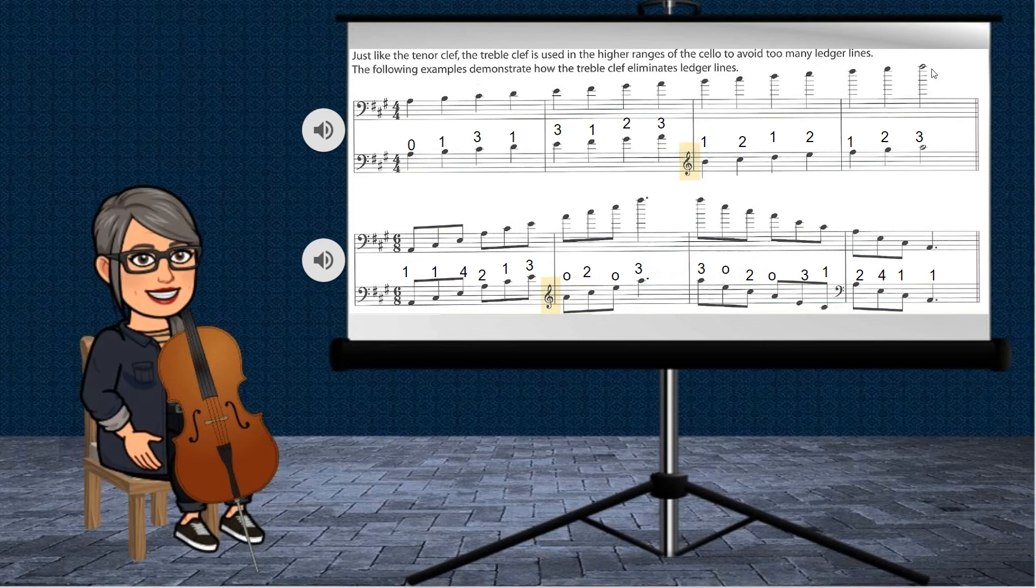There's one, two, three, four, five, six, seven. There's seven ledger lines, whereas when we transition into treble clef, we eliminate most of them, and we end up with just one. Let me go ahead and play this example for you.